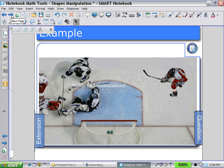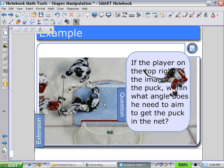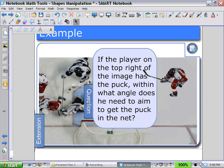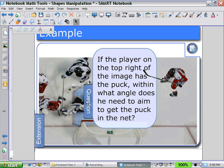Now let's look at an example of how this may be used. Setting up this question: if the player in the top right of the image has the puck, what angle does he need to aim to get the puck in the net?